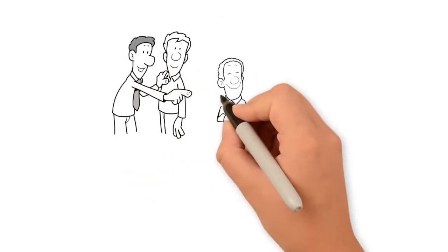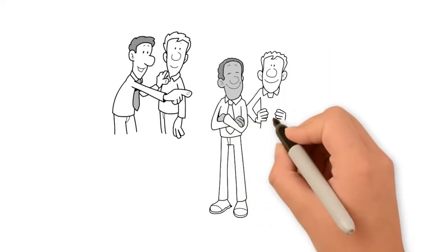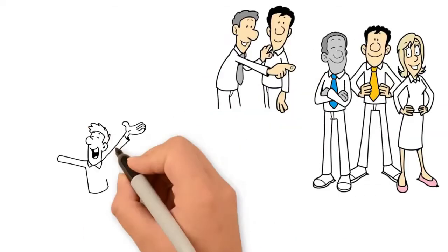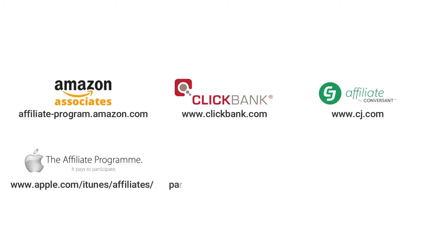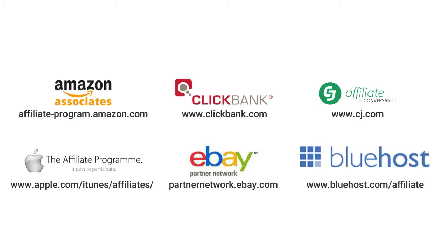Number two: affiliate marketing. By recommending other people's products and simply getting affiliate links in front of a target group of people, you earn a commission on every sale. Clickbank.com, affiliate-program.amazon.com, cj.com, apple.com/itunes/affiliates, partnernetwork.ebay.com, bluehost.com/affiliate.